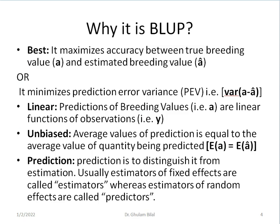Now, why BLUP is called BLUP? B stands for best. It is considered best model because it maximizes accuracy between true breeding value, which is A, and estimated breeding value, which is A hat. Or it minimizes the prediction error variance, which is variance of A minus A hat. It is called linear because predictions of breeding values, the A's, are linear function of observations.